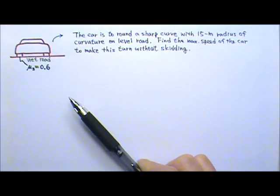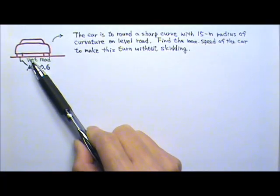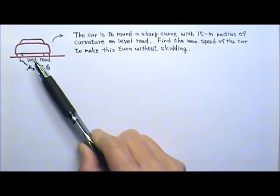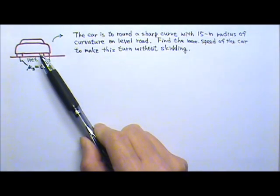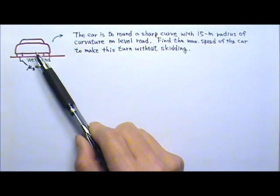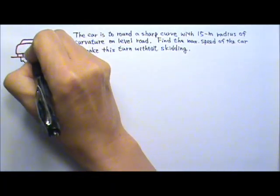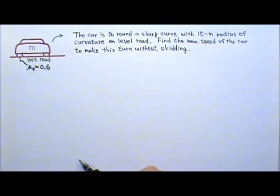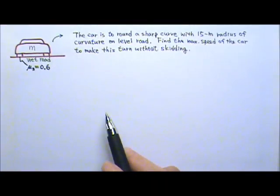Another thing about this problem is that the mass of the car is not given to you. If a problem does not give you the mass, usually it means that the mass does not matter. So you can just use M for the mass of the car, and hopefully M will cancel and therefore will not affect your answer.